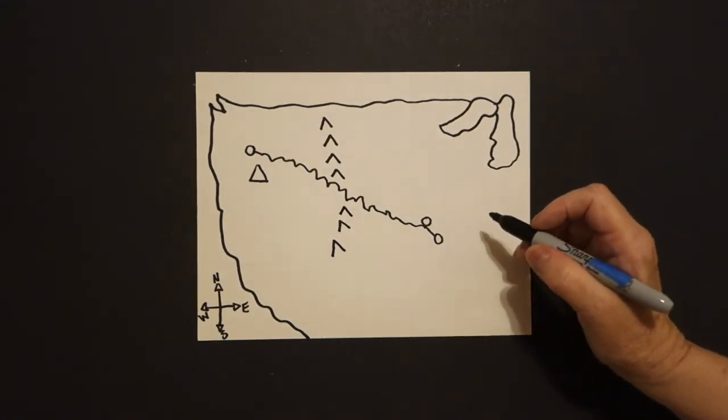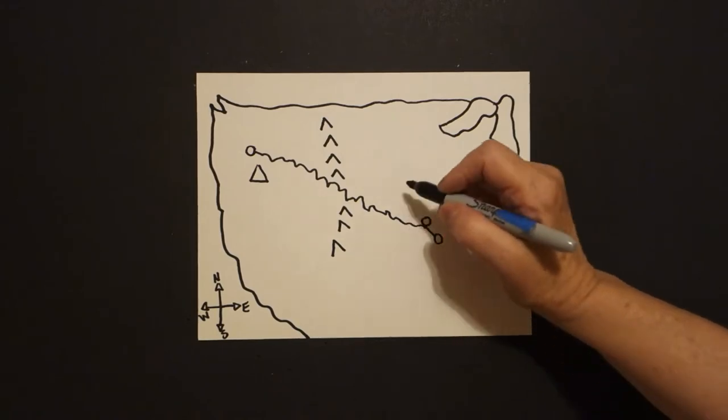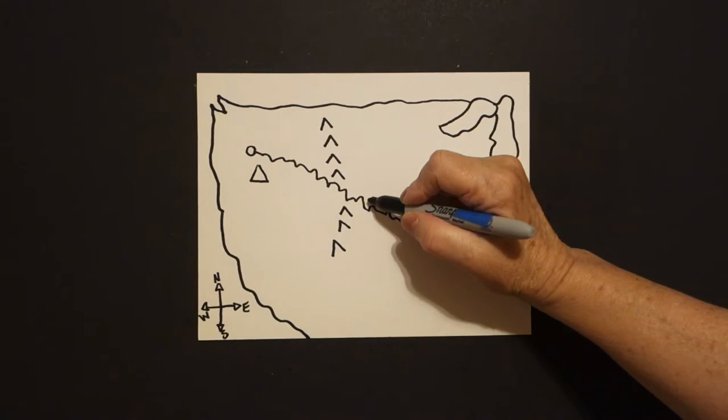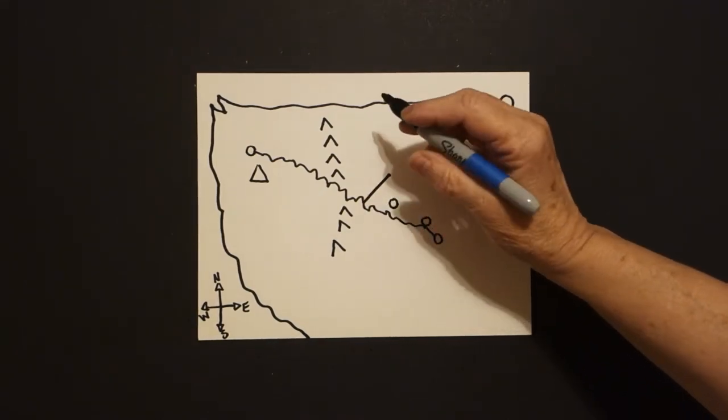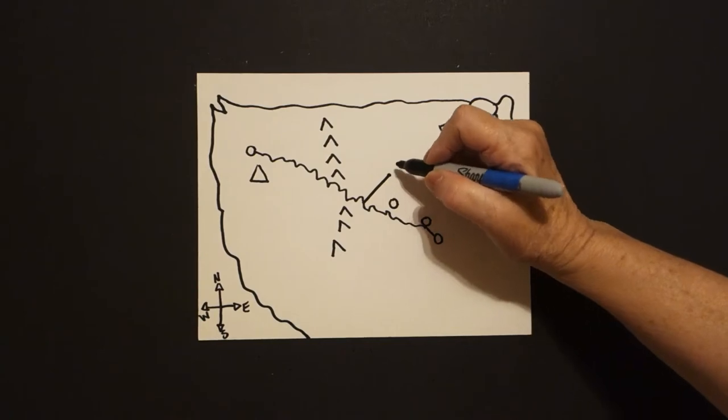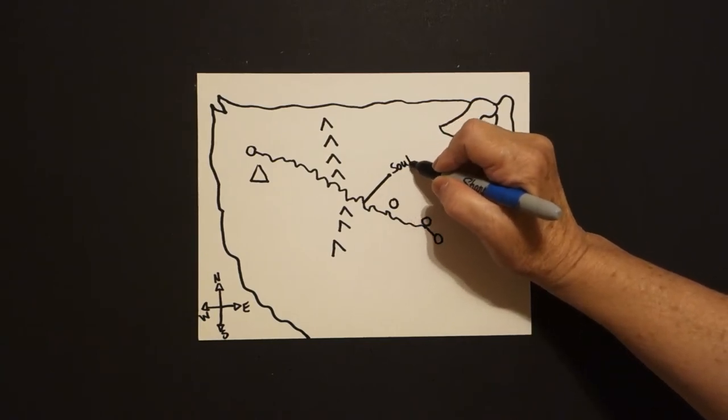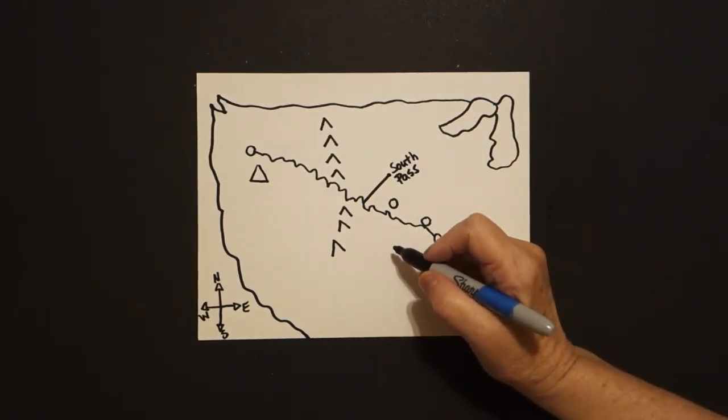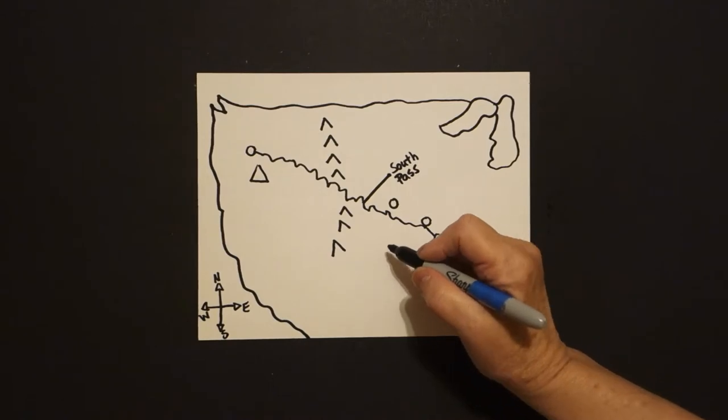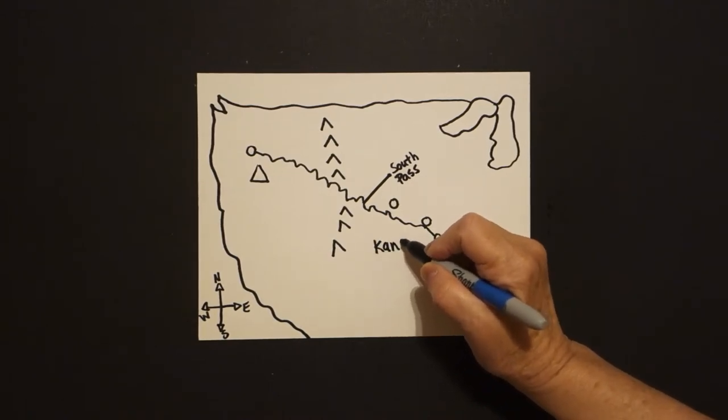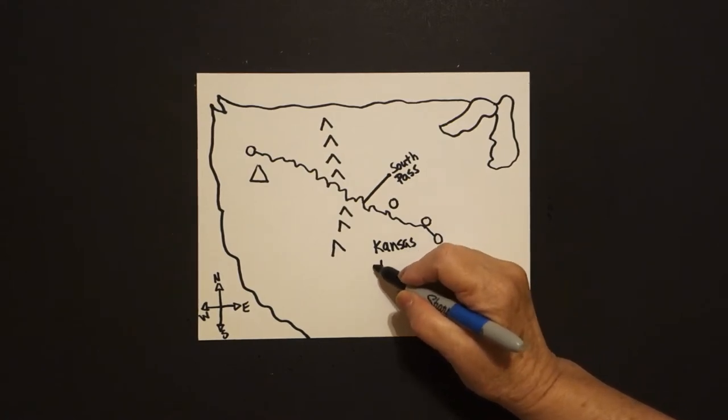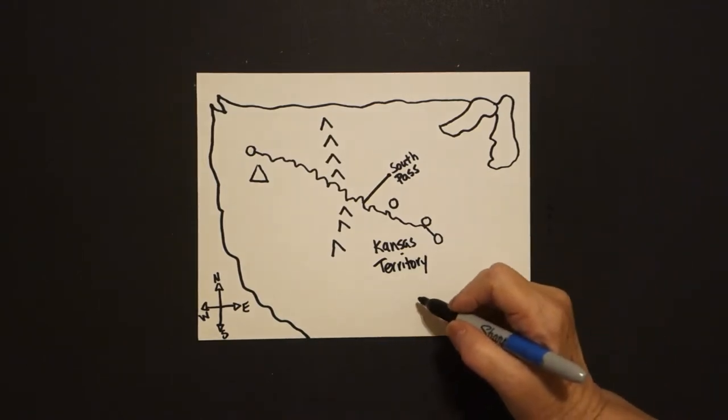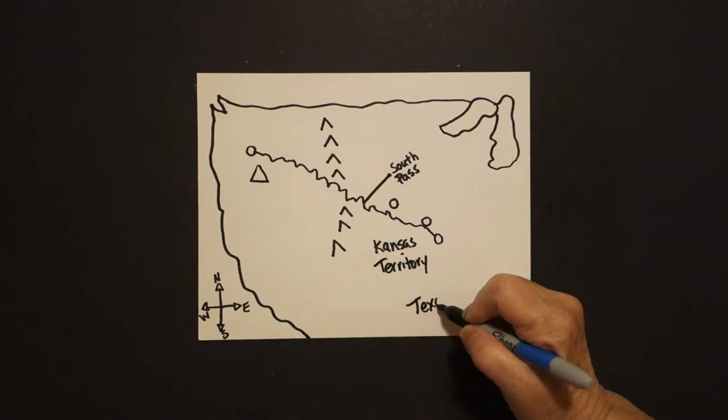Come back over here to our baby circles, come up a little bit to right about here, and put another baby circle. Right here, put a straight diagonal out, and we're going to write, let's start labeling this so that we know where we are. This is the South Pass, which is very important. And now we're going to start labeling all of the territories. Down below is the Kansas Territory, and some of these are going to overlap, and some of them are going to be squished. Way down here is Texas.